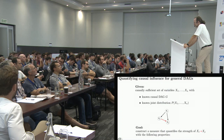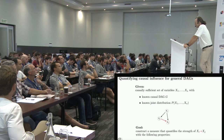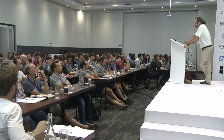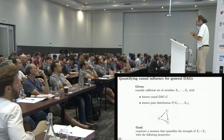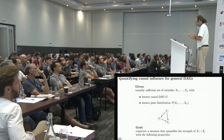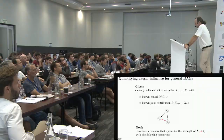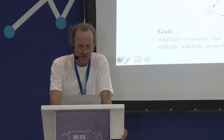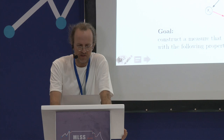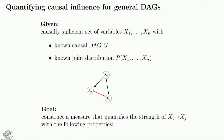Briefly, on quantifying causal influences: sometimes people use transfer entropy in Granger causality to measure the strength of causal influence. We thought about this problem and have a paper in the Annals of Statistics. Given a known causal DAG and known joint distribution, we want a sensible measure of causal strength from node i to node j. We approached this by identifying reasonable postulates: for a graph containing only X and Y, the causal strength should equal the mutual information between X and Y. A locality postulate says that what happens upstream of X or downstream of Y should not change the causal strength from X to Y.